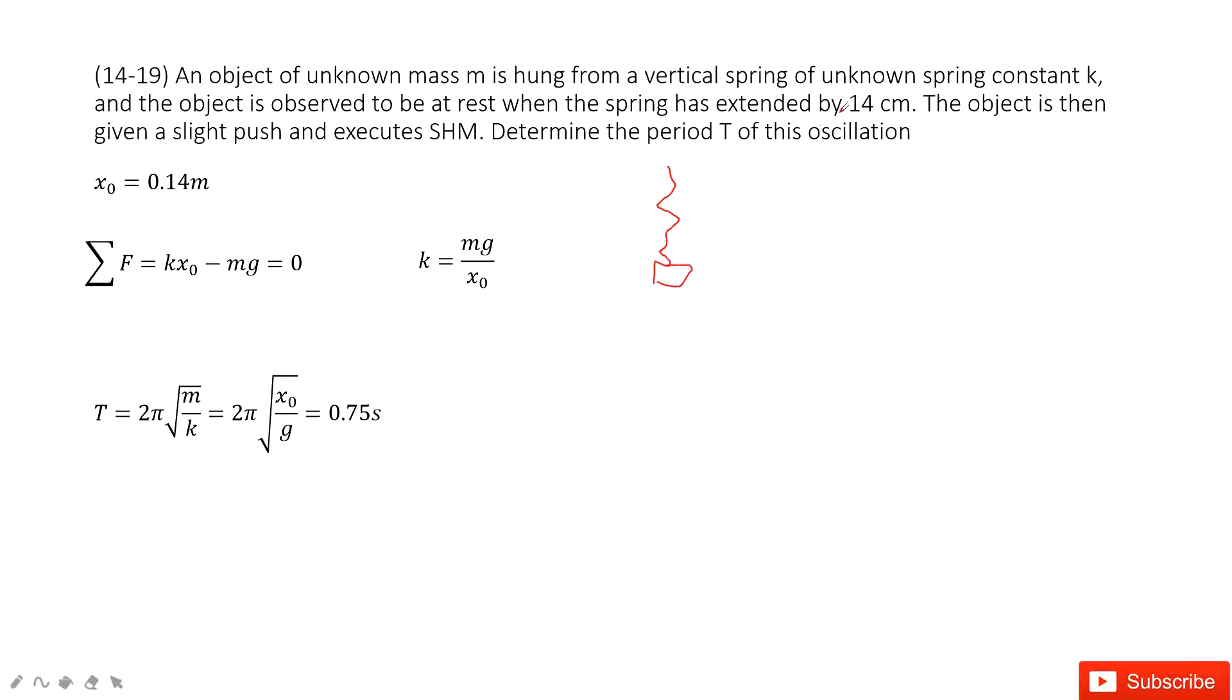This spring extends 114 centimeters. So that means at this point, the force is balanced. The elastic force equals gravity. And this x knot is given 0.14 meter, right?